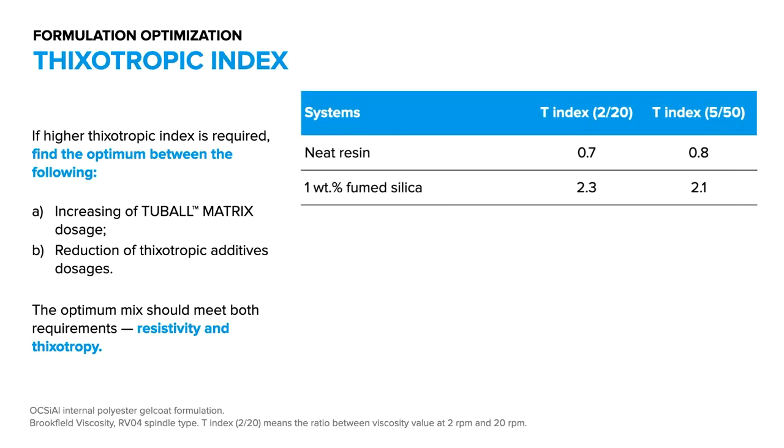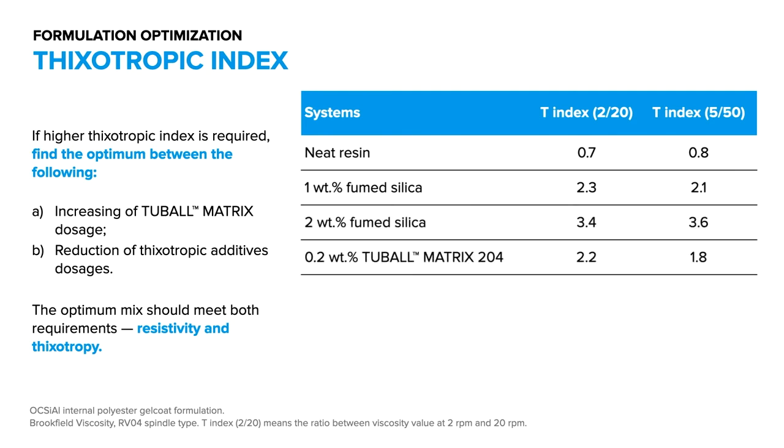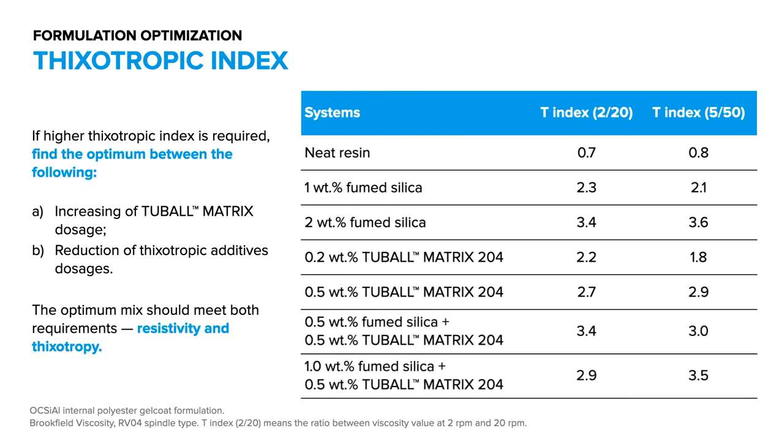We recommend to increase the Tubal Matrix 204 loading and decrease the amount of thixotropic additive you have in your formulation to get the right balance between conductivity and resistivity.